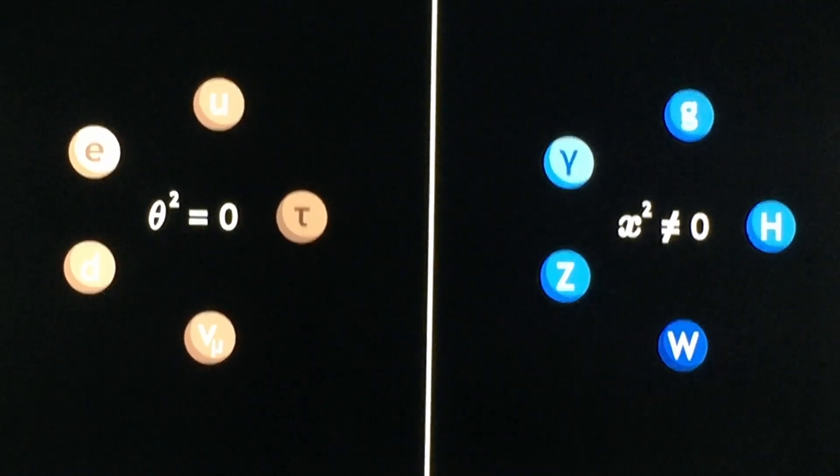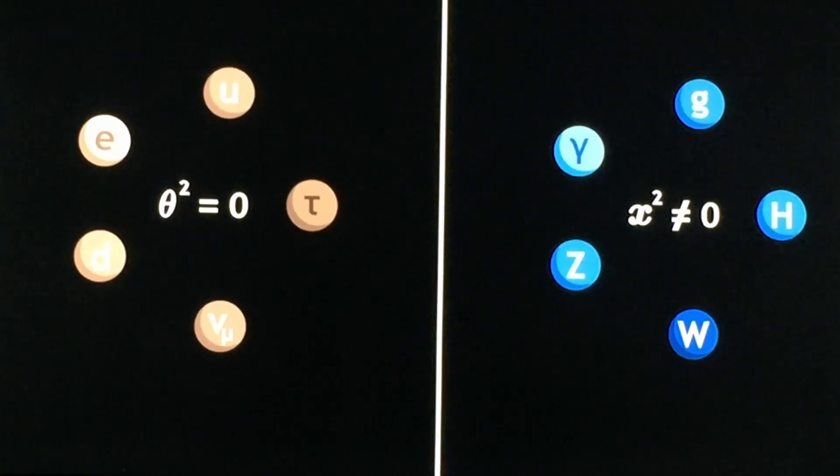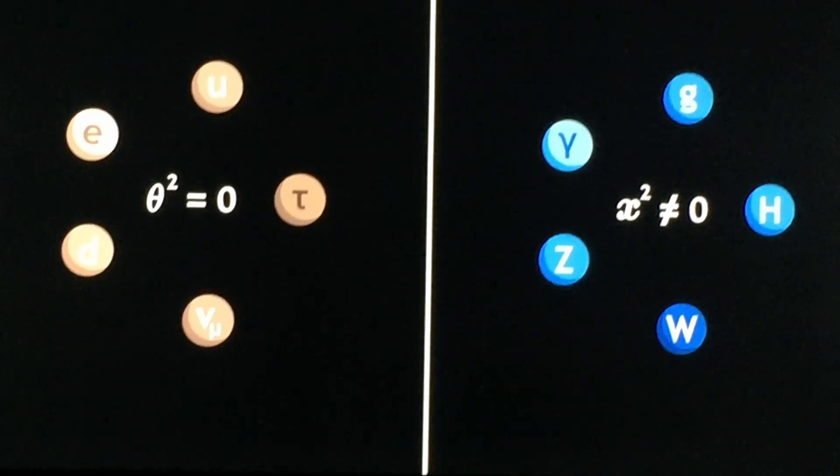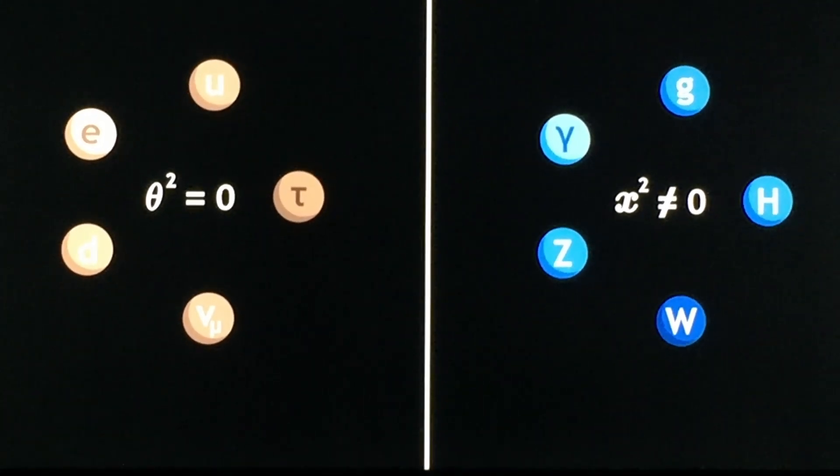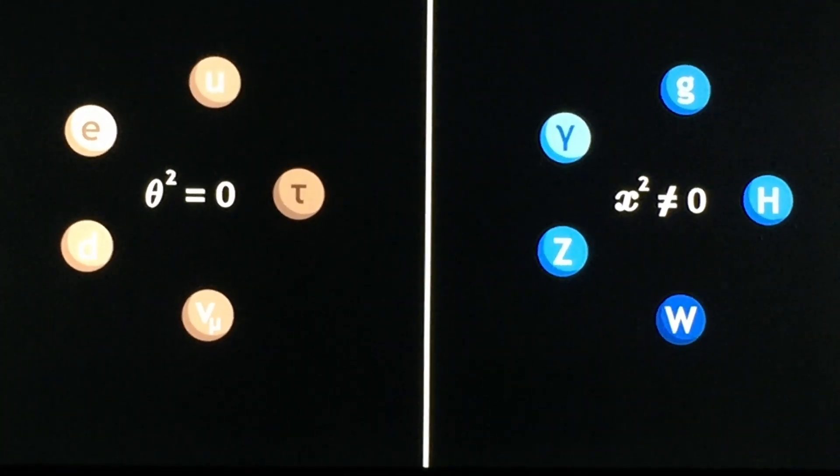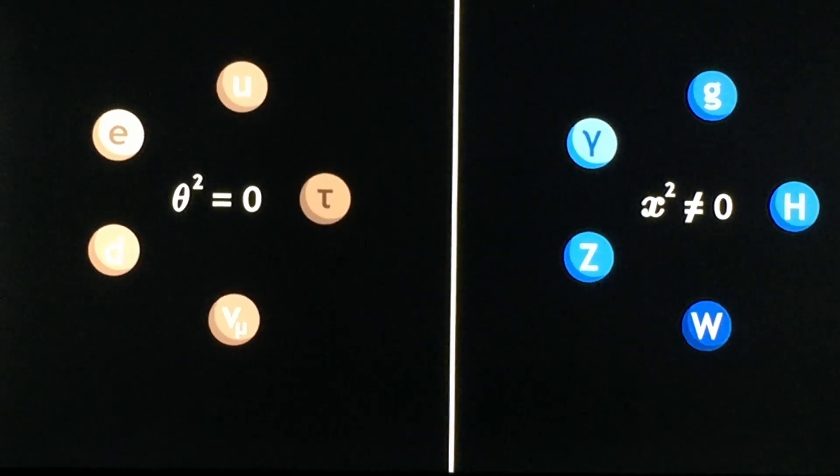So you can see the thing on the right has an ordinary number, x squared. And therefore, because of that, it can be in two places at the same time. So like a force can be in two places at the same time.